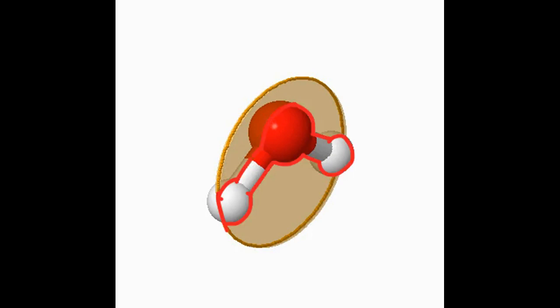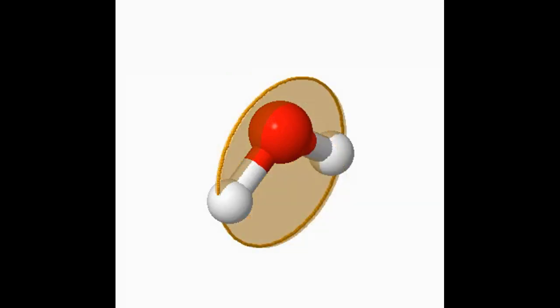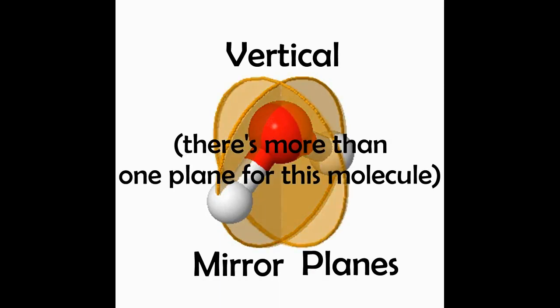So this is obviously one type of symmetry operation because when we started with a water molecule, if you do the reflection, it looks exactly the same. Nothing changed. You can do it two different ways in this case, and it still looks like the same thing. So it's definitely a symmetry operation. And this operation, we call it reflection along a vertical mirror plane. That's the key word here.